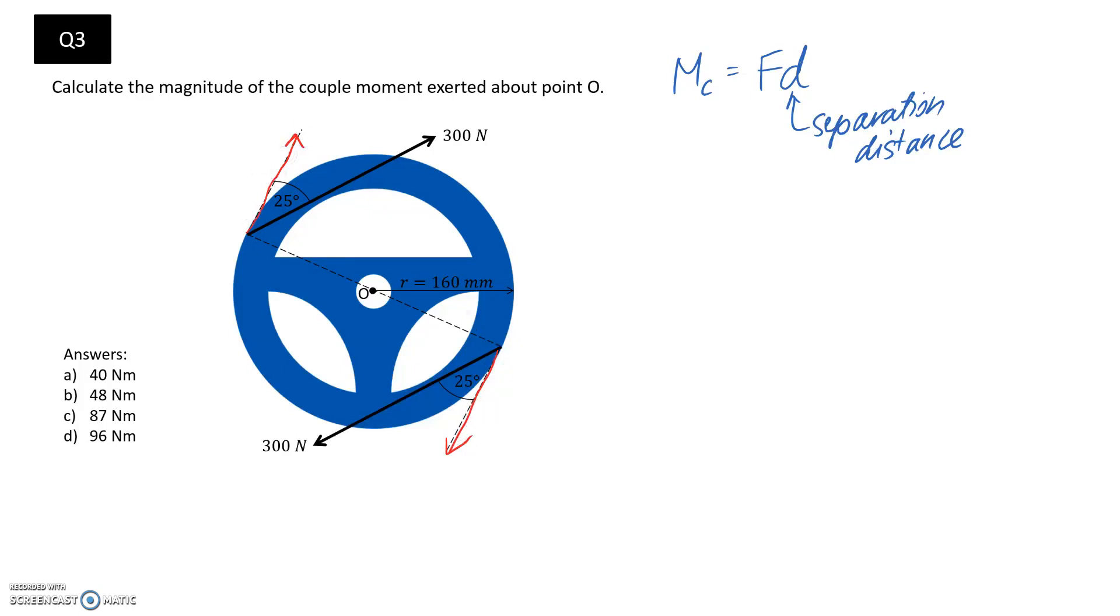We could have a component running tangent to the circle, and that's going to mean that the separation distance between these two forces is equal to the diameter. That's quite easy to calculate since we have the radius of the circle given.